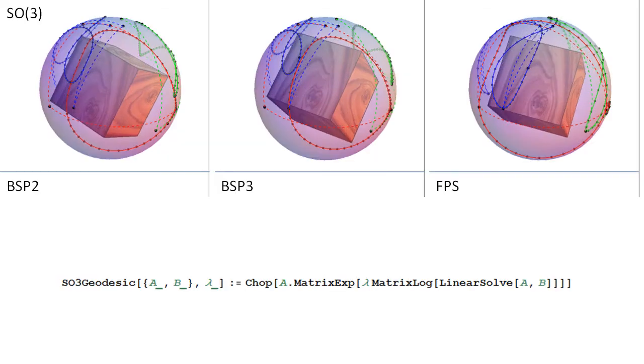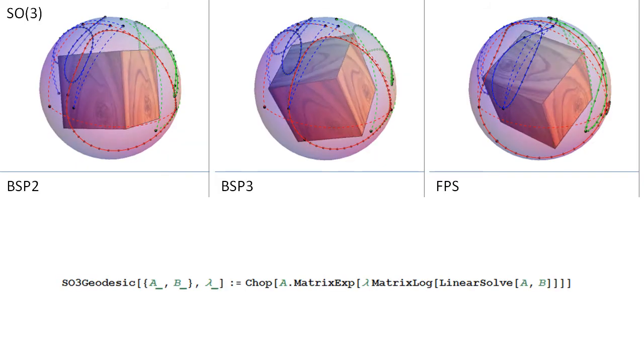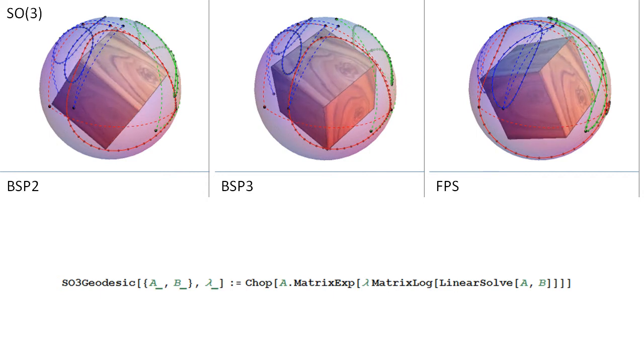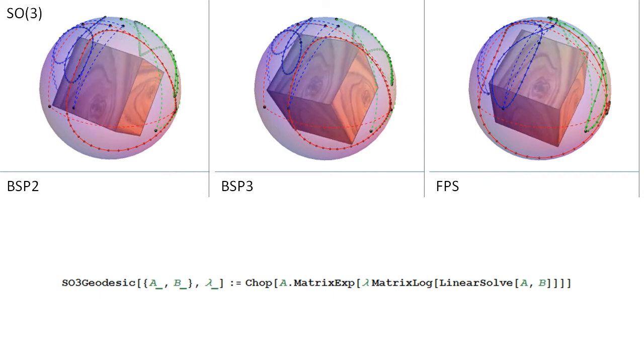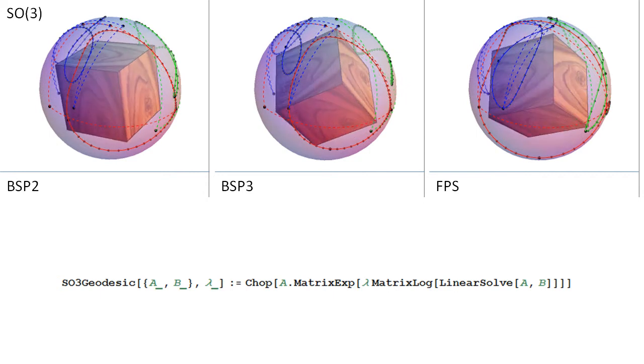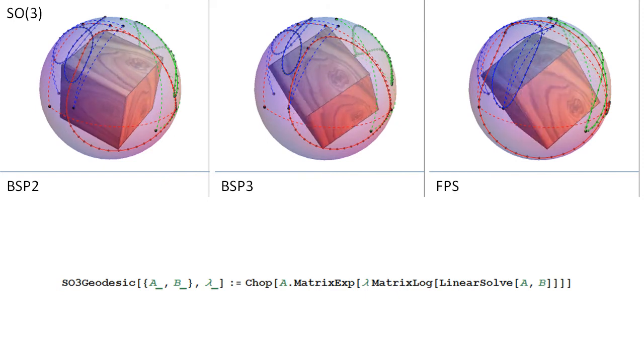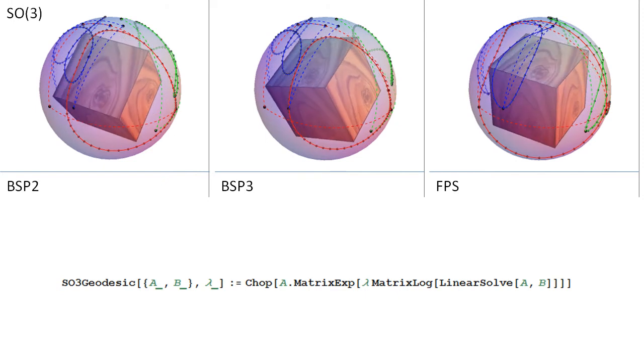Our final example shows subdivision curves in SO3. Every point represents an orientation in 3D. The curves are traced to produce the animations. The numeric formula for the geodesics is particularly simple.